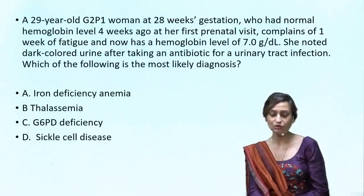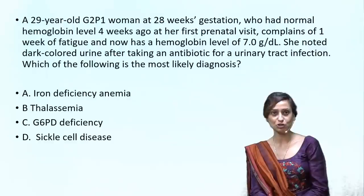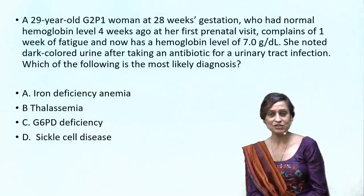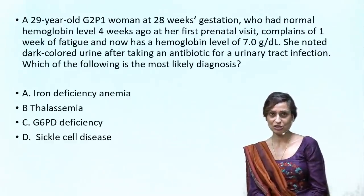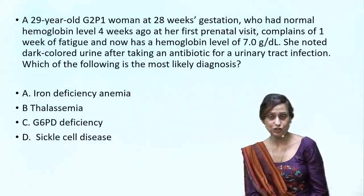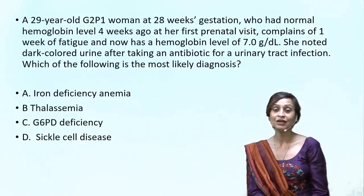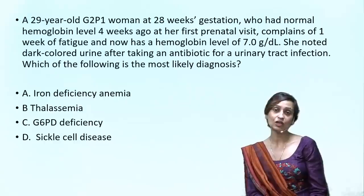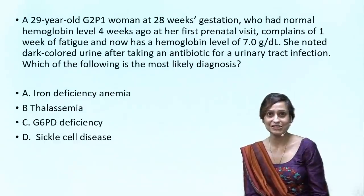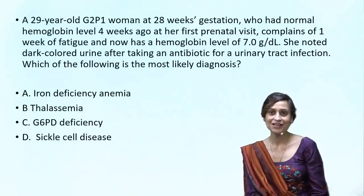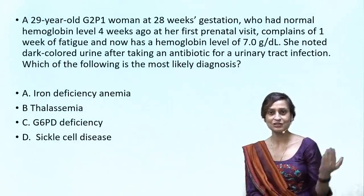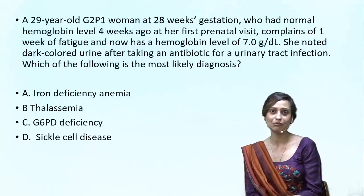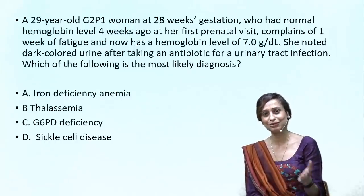Now let's look at the options. The options for this patient are: Is she having iron deficiency anemia? Is it thalassemia? Is it G6PD? Or is it sickle cell disease? An obstetric question has gone down to anemias and can also be linked to biochemistry — that's what we mean when we talk about Next Pattern or clinically integrated MCQs.